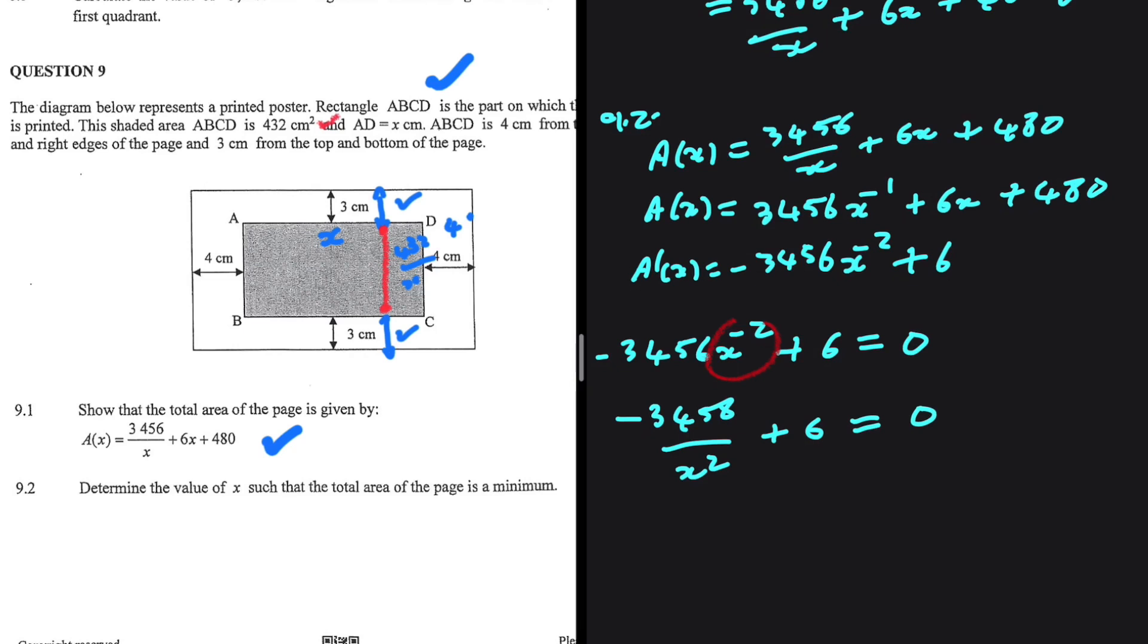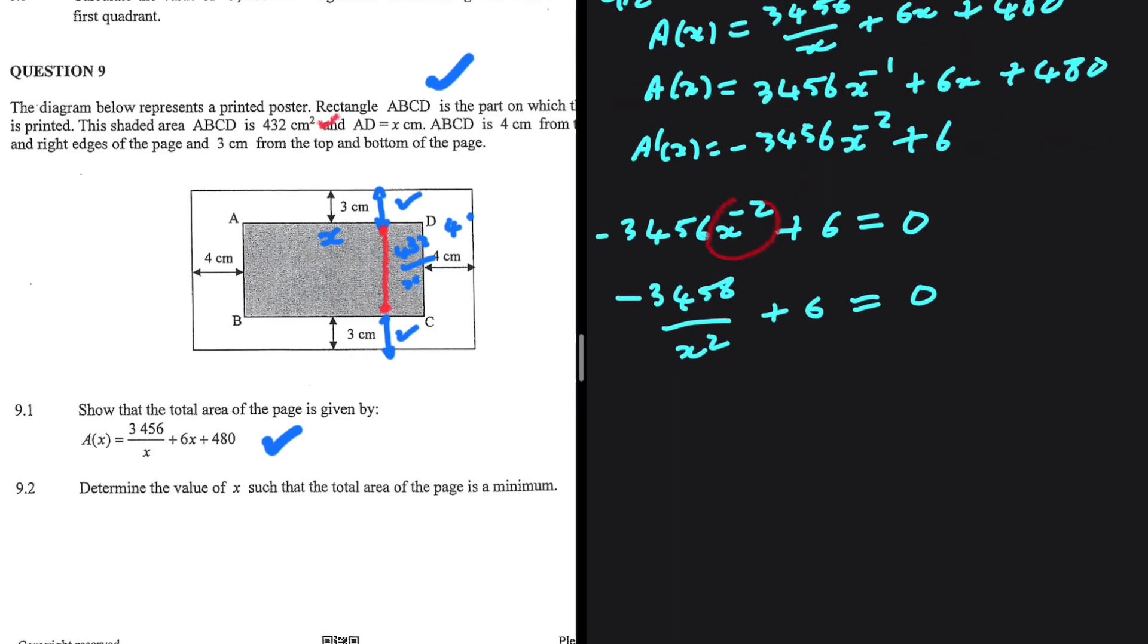Multiply both sides by x². We get 6x² - 3456 = 0.